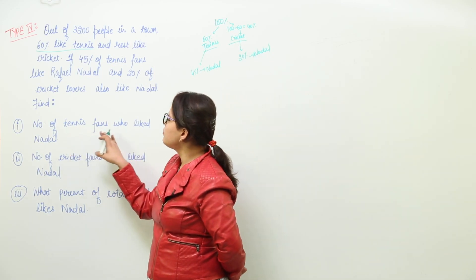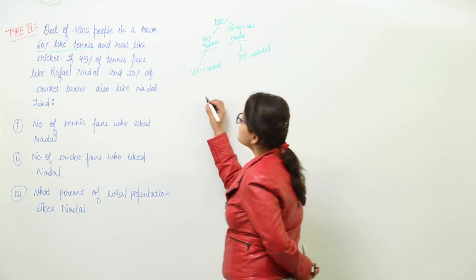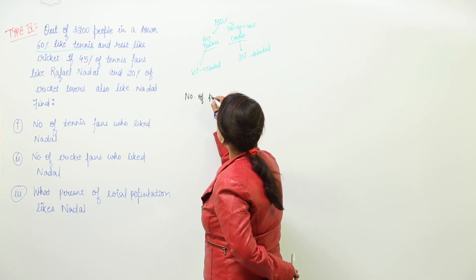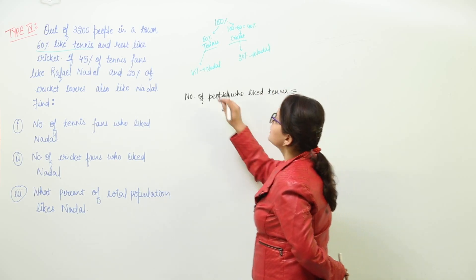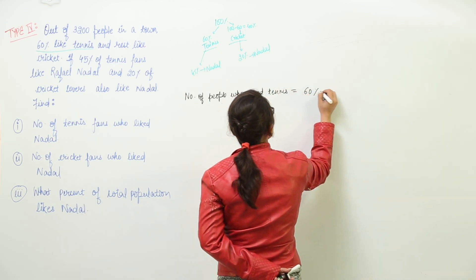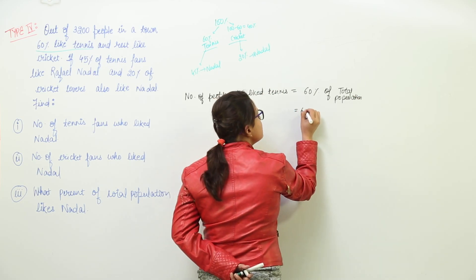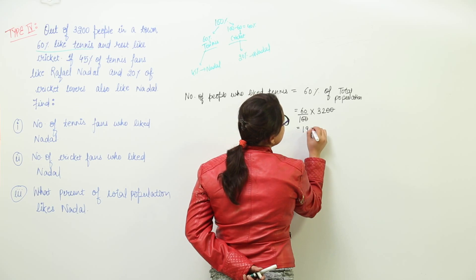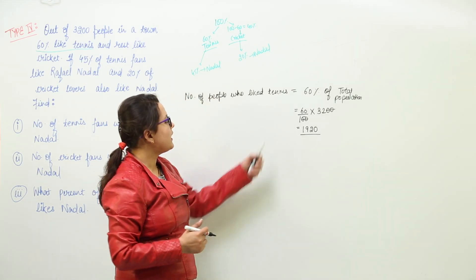We have to find out the number of tennis fans who like Nadal. Let us go step by step. The first step is to find out the number of people who liked tennis. As we know, 60% of the total population liked tennis, so we will do 60 upon 100 of 3200. Cancelling out the zeros, we get 1920.